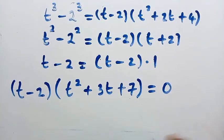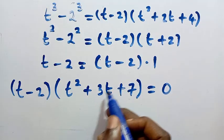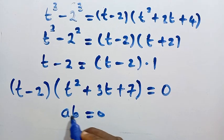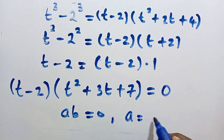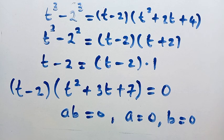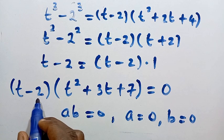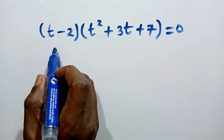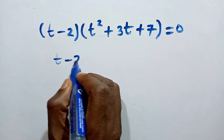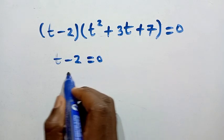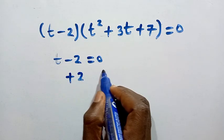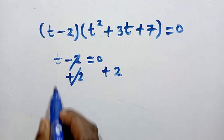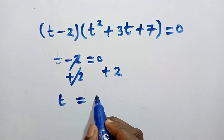We have two factors: t minus 2 and t squared plus 3t plus 7. Since their product equals zero, each factor can equal zero. Setting t minus 2 equals 0 and adding 2 to both sides gives t equals 2.